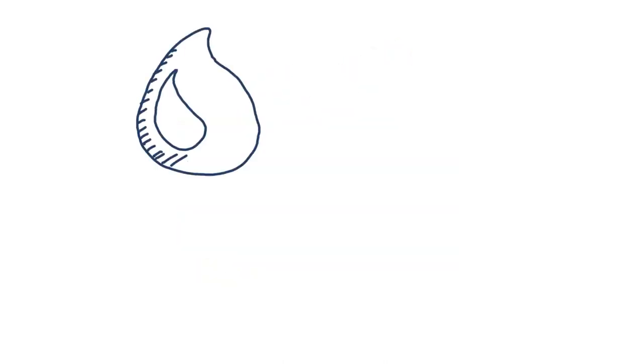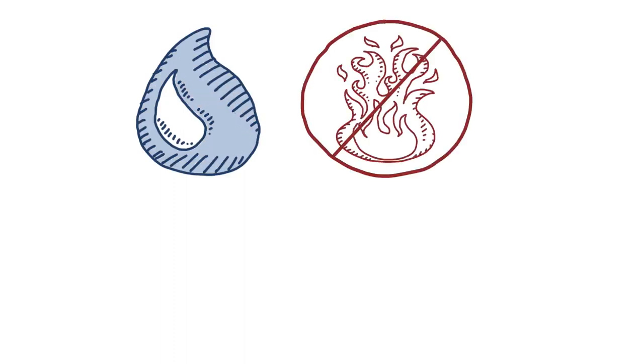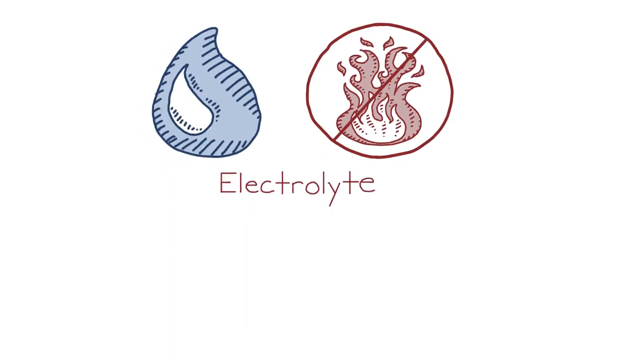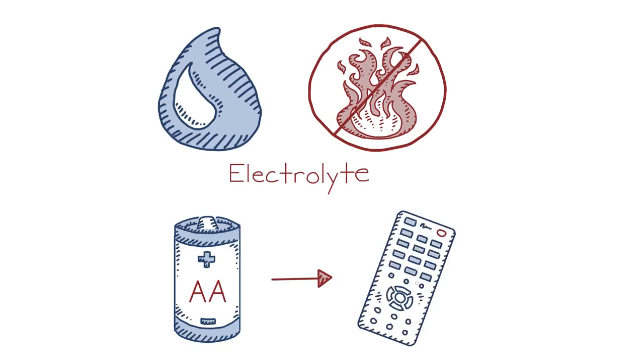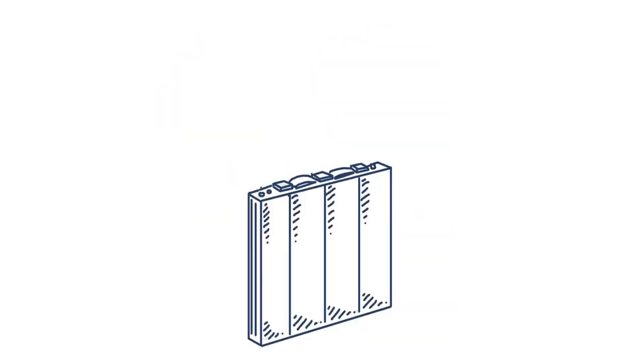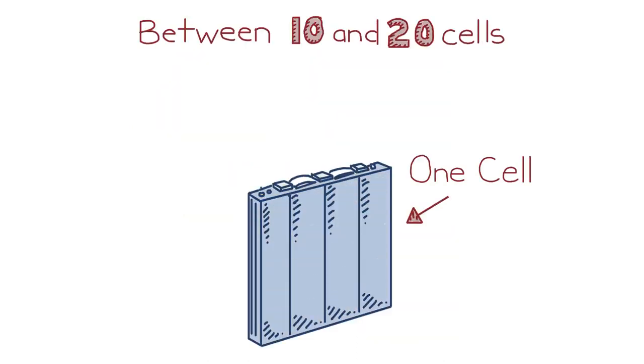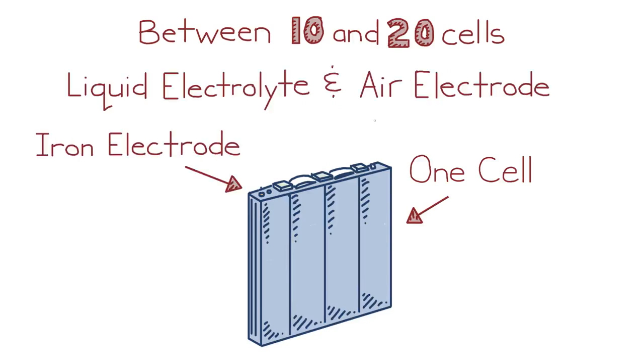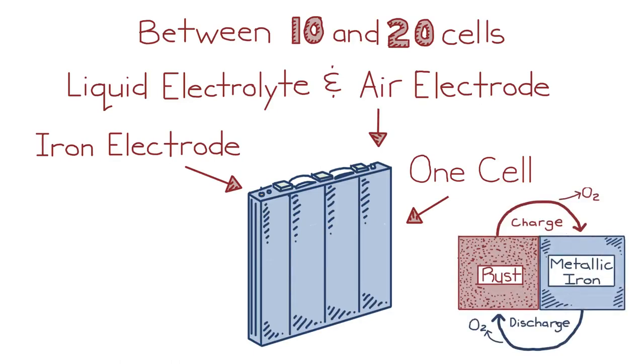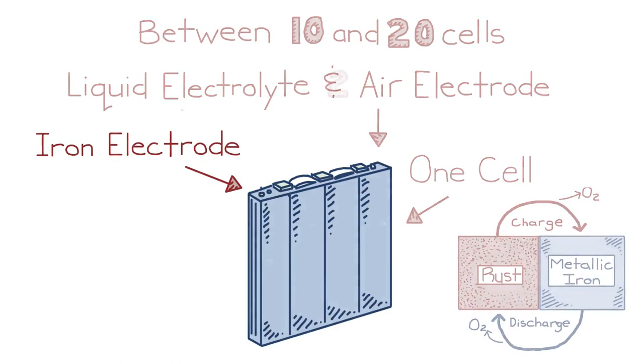Taking an even closer look inside the battery, each one is filled with a water-based, non-flammable electrolyte like those used in the AA batteries in your TV remote. Inside the battery are stacks of anywhere between 10 and 20 cells, which each include an iron electrode, the liquid electrolyte, and an air electrode, the parts of the battery that conduct and carry electricity on charge and discharge.